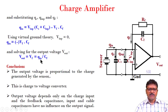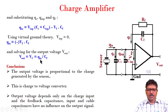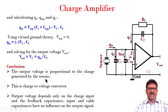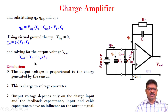The output voltage is proportional to the charge generated by the sensor. This is a charge-to-voltage converter because the output is voltage and the input is charge. Output voltage depends only on the charge input QIN and the feedback capacitance CF. Input and cable capacitance have no influence on the output signal.